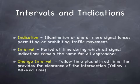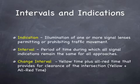An indication is the illumination — the lighting of one or more signal lenses — permitting or prohibiting a traffic movement. So if there's a green indication, the green light is lit; if there's a red indication, the red light is lit. The interval is the period of time when all indications are fixed before any one of them changes. For example, it's green for northbound movements, green for southbound movements, and red for eastbound and westbound movements. As long as all of those things are true, it's an interval.